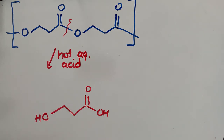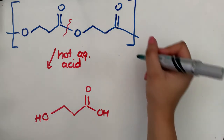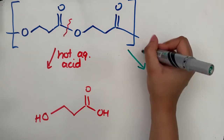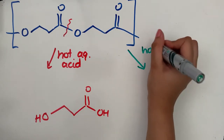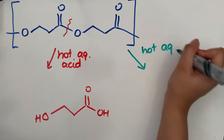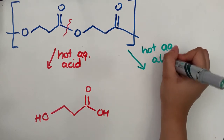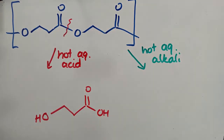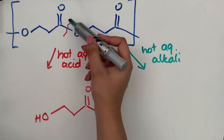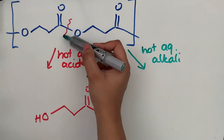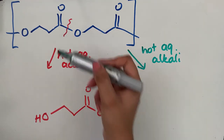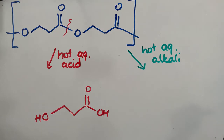If we now go on to the other one, which is alkaline hydrolysis — this is now going to be using hot aqueous alkali. We're still going to be breaking that ester bond, but now we're actually going to get slightly different products.